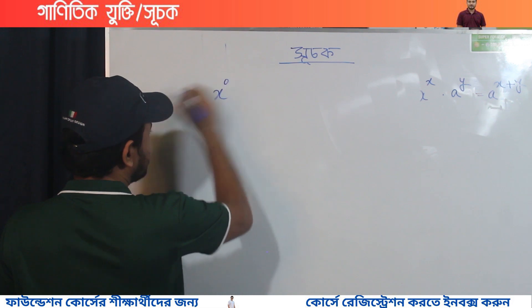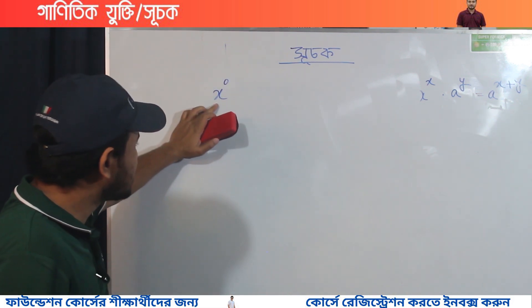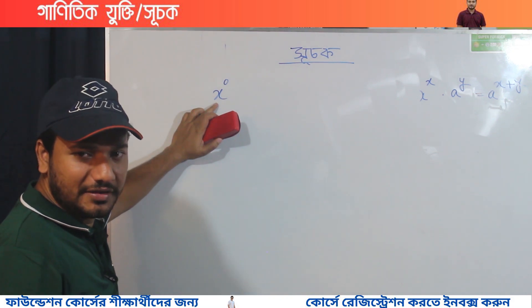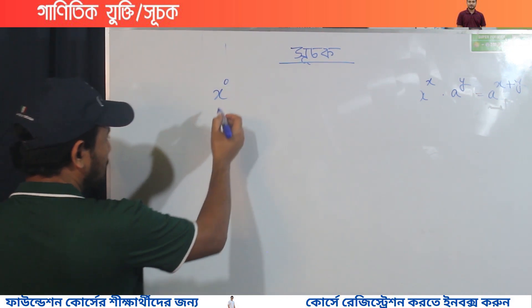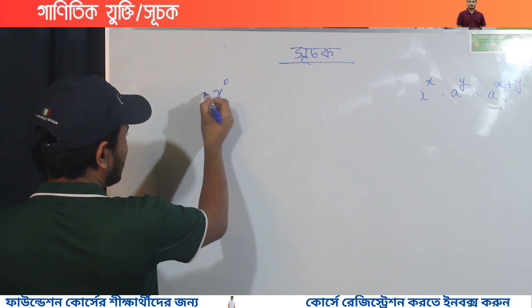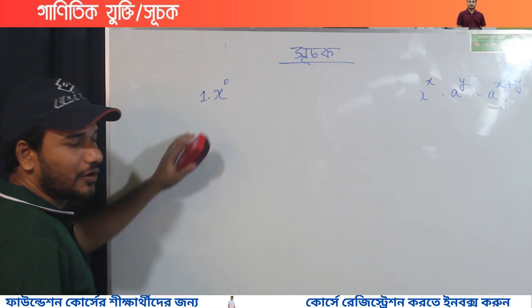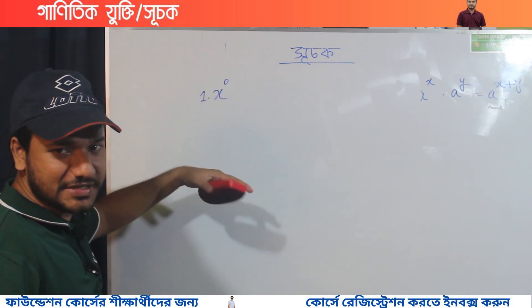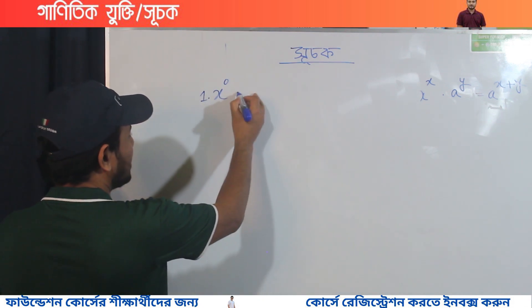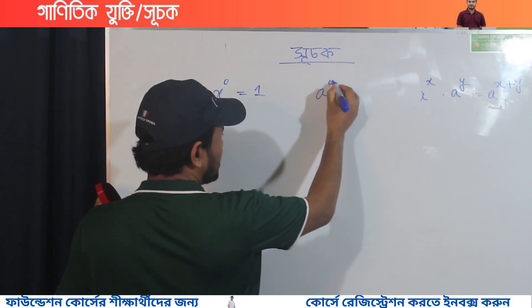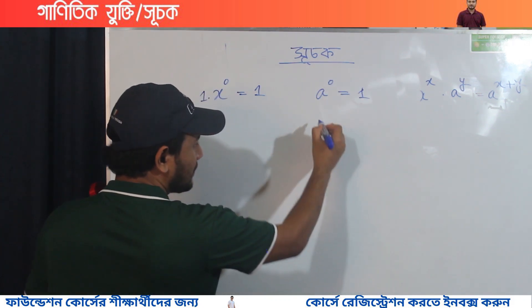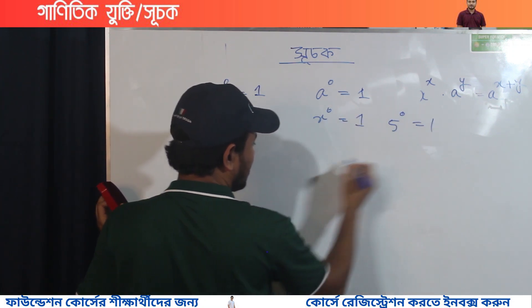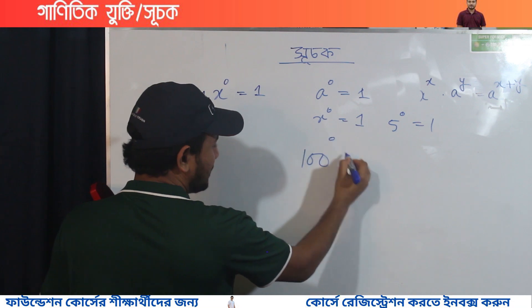x to the power 0 is 1. x to the power 0 is 1. We need to understand why x to the power 0 equals 1.